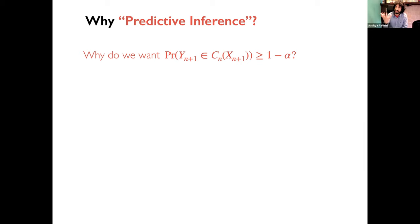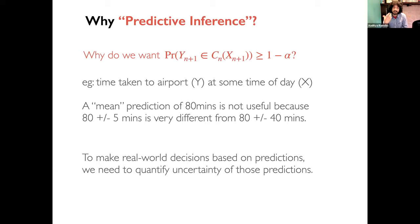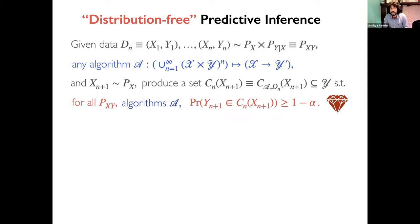Why do we want predictive inference? Take an example: y is travel time to the airport and x is the time of day. If I just tell you it will take 80 minutes, that's not very useful. The way you act when it's 80 ± 5 minutes versus 80 ± 40 minutes is very different. Even though the mean prediction is the same, you act very differently — so to make real-world decisions, we need to quantify prediction uncertainty.